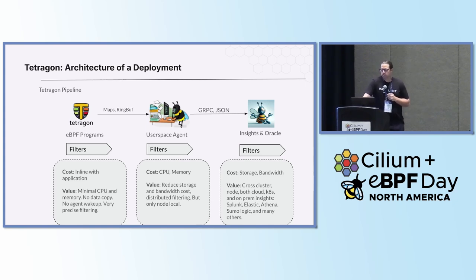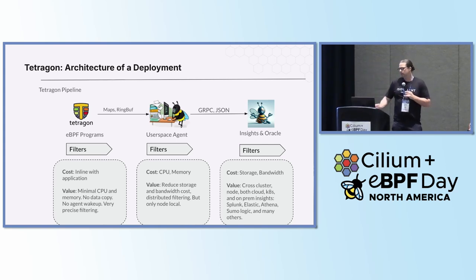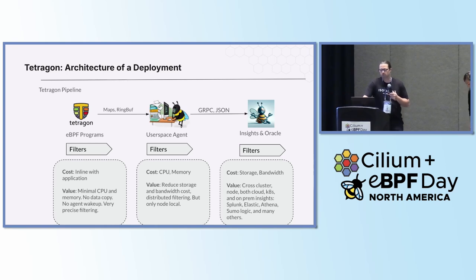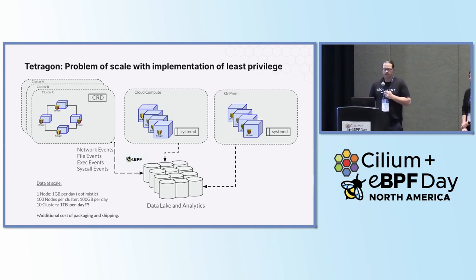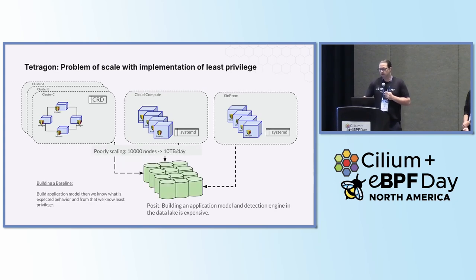The further out you get from BPF, the easier it is to filter at global or node levels, but it becomes costly. Every time you get an event, you have to wake up the user space agent, use CPU, use memory. You could push these millions and millions of events into a database, but now you have a data storage problem — you might be storing terabytes of data a day. Just a quick calculation: if you do one gigabyte per node, 100 nodes per cluster, 10 clusters — you're already at one terabyte a day. And we see clusters even bigger than this, so a terabyte a day might become 10 or 100 terabytes a day.